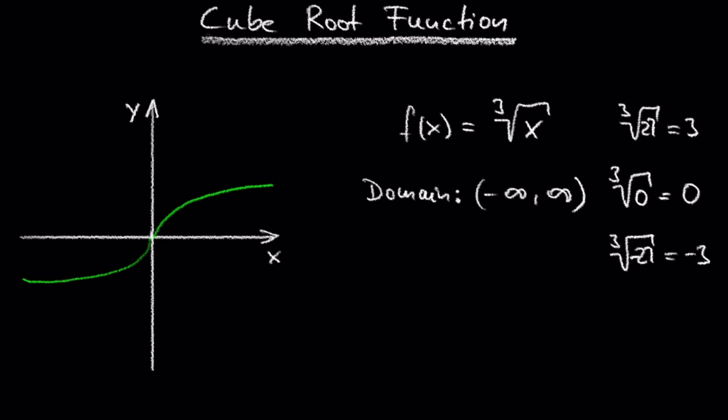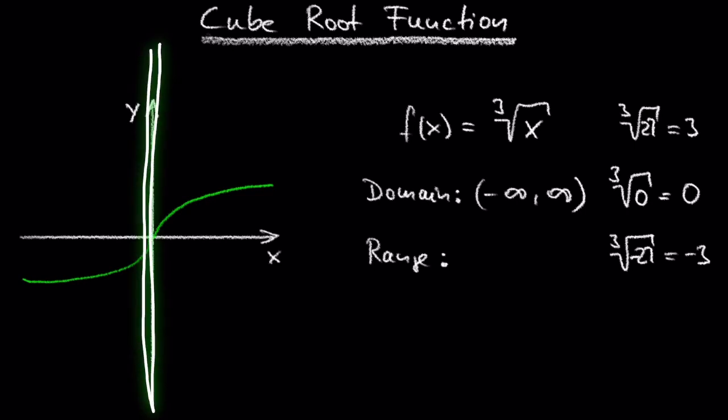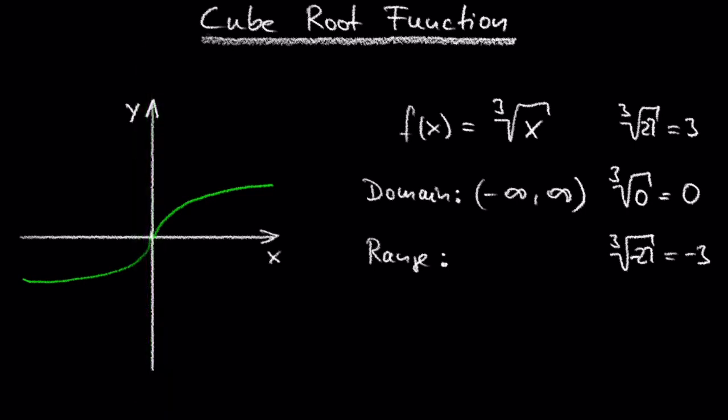What about the range? The vertical extent of the graph is the whole real number line. In other words, the range goes from negative infinity to positive infinity.